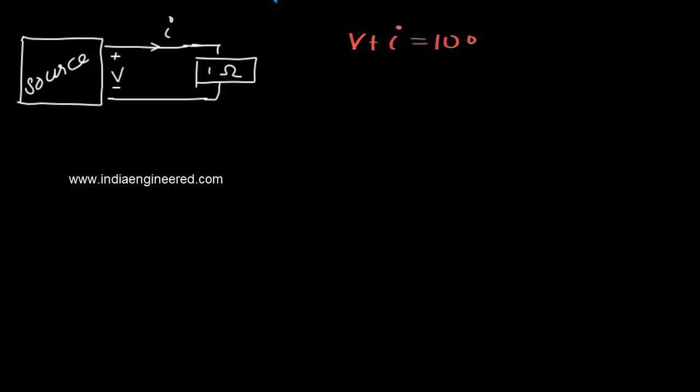The load line of the source is given, which we can consider as equation 1. From this circuit, it is clear that V equals I times 1 ohm.